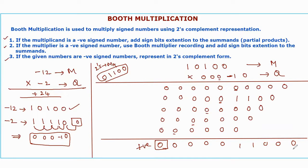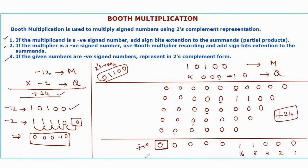The leftmost bit is 0, meaning this is a positive number — no need to convert to two's complement form. This is the final answer. Assigning binary weights 1, 2, 4, 8, 16: 16 plus 8 equals 24. Our answer is plus 24. Cross-checking: minus 12 times minus 2 equals plus 24. Correct. These are the examples for Booth Multiplication with different signed numbers.